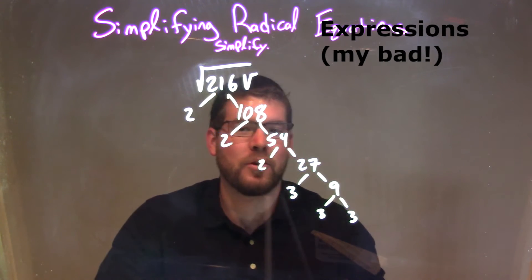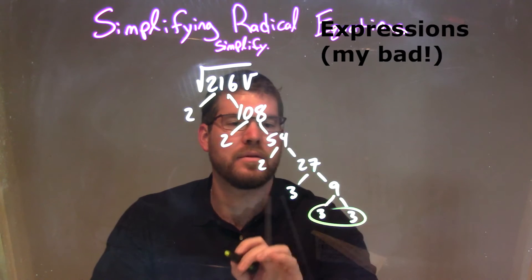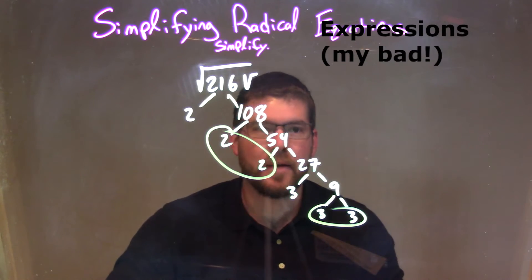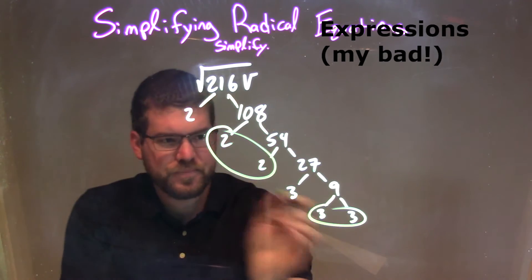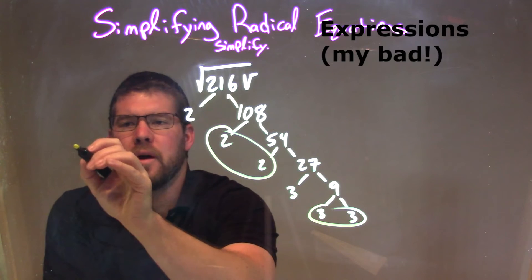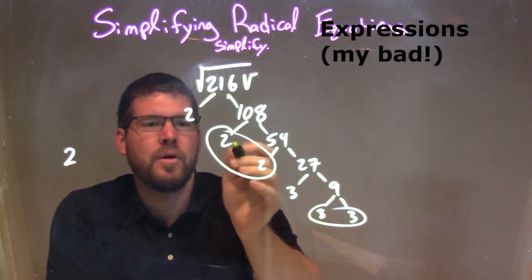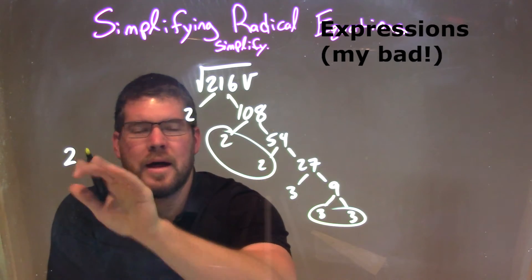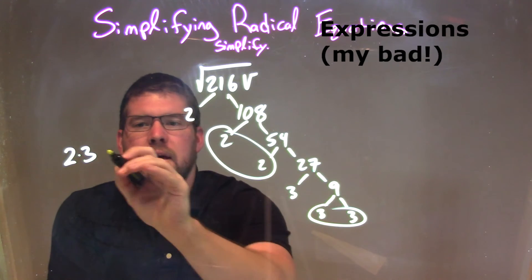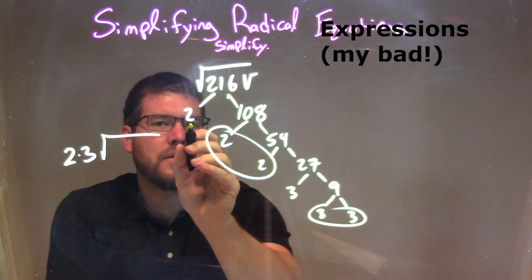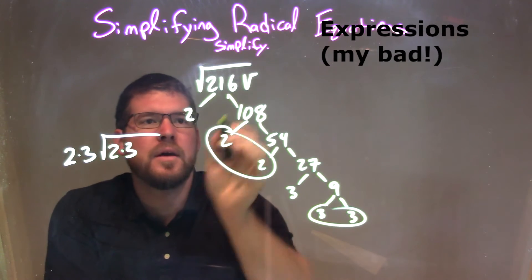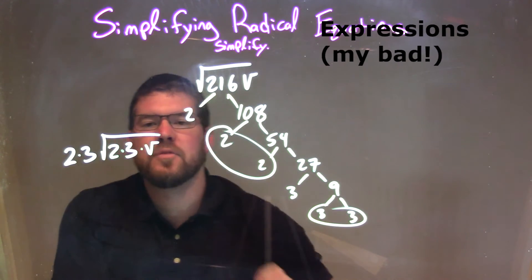So now I want to circle my pairs. I have one pair of 3s and one pair of 2s, and those are my only pairs. Every pair comes out to the outside of the square root, so we have a pair of 2s — put one 2 on the outside — times one pair of 3s, that goes outside too. Inside the square root I have the singles left over: 2 times 3, and then times V, which is just left over on the inside.